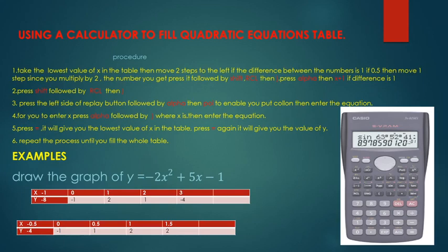There must be a constant difference. If the difference is 1, I multiply by 2 — 1 times 2 is 2. That means if I move from negative 1 two steps to the left, I'll find negative 3. Therefore, my work here is to press negative 3 — you press the negative sign, then press 3.